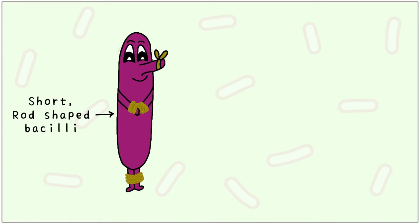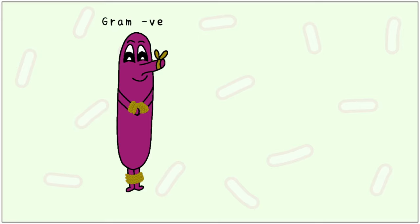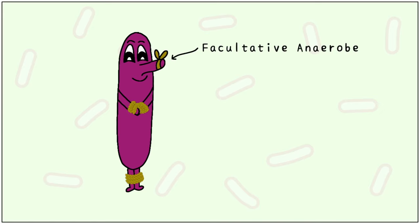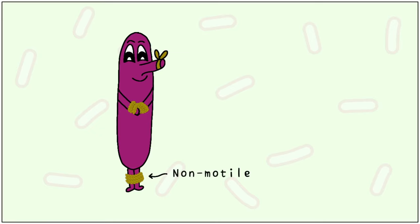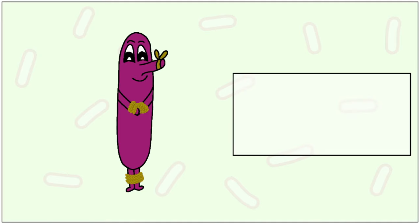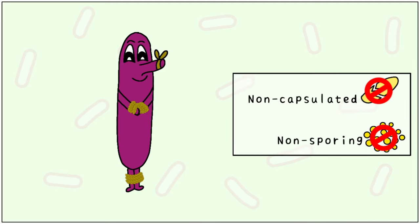Shigella is a short, rod-shaped bacilli. It is gram-negative and appears pink in colour. It is a facultative anaerobe, which is easy to remember by the tape on its nose. Its hands and legs have been tied up, indicating it is non-motile. Shigella is non-capsulated and non-sporing.